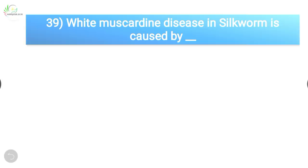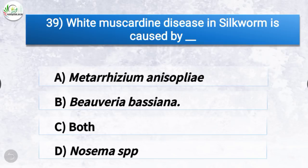Question number 39: White muscardine disease in silkworm is caused by? The correct answer is option B, Beauveria bassiana. White muscardine disease in silkworm is caused by Beauveria bassiana.